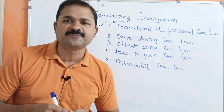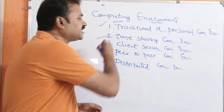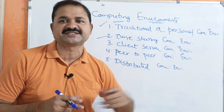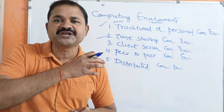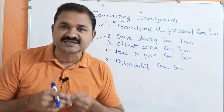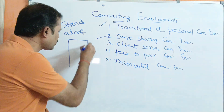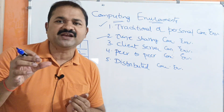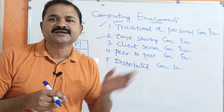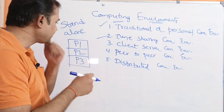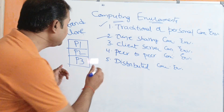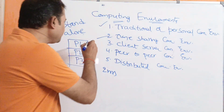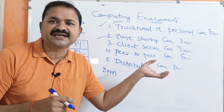The second one is time sharing computing environment. The name itself specifies the meaning — here the CPU time will be shared among multiple tasks and multiple processes. Let the main memory contain three processes: P1, P2, and P3. The operating system allocates CPU time for two milliseconds, so the CPU can execute each process only for two milliseconds.